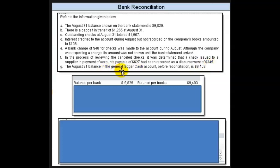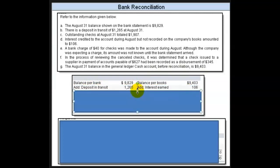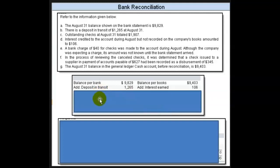The August 31st balance in the general ledger cash account before the reconciliation is $9,403. So I've got the balance per bank on one side and the balance per book on the other. Now we've got to record the various transactions. The way you approach this is: what does the bank know that I don't know? That goes over here. What do I know that the bank doesn't know? That goes on this side.